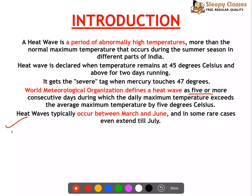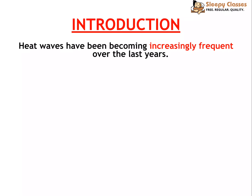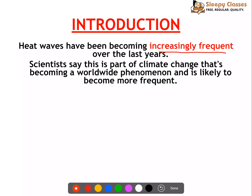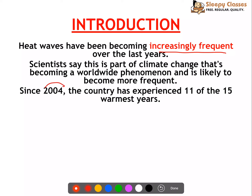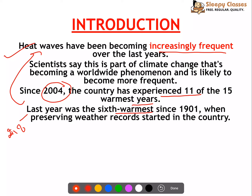In some rare cases heat waves extend until July, mostly confined to north, north-west, central, eastern, and coastal regions of India. Heat waves have become increasingly frequent over the last few years due to climate change. Since 2004, the country has experienced 11 of the 15 warmest years. The year 2018 was the 6th warmest year since 1901 - 1901 being the year from which weather records have been preserved in the country.